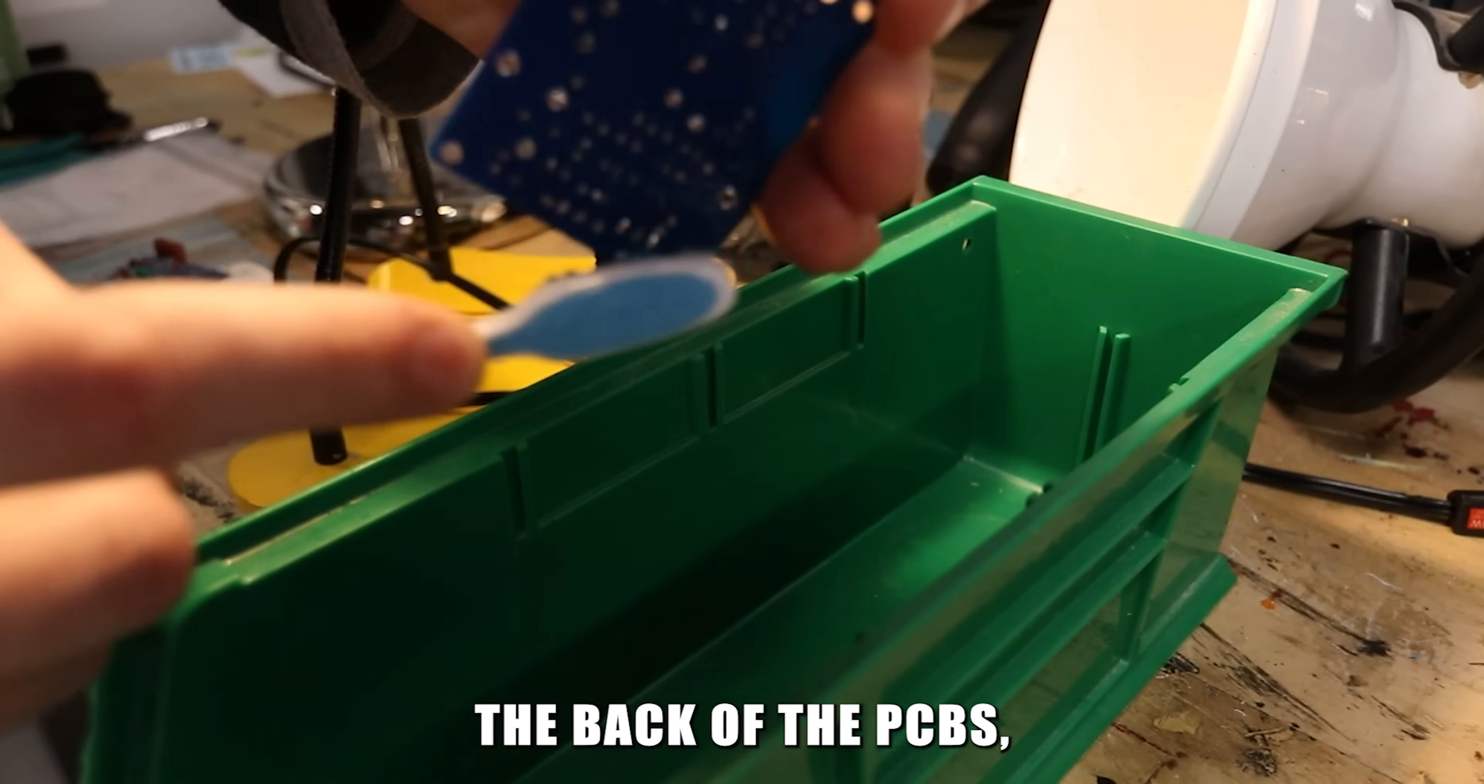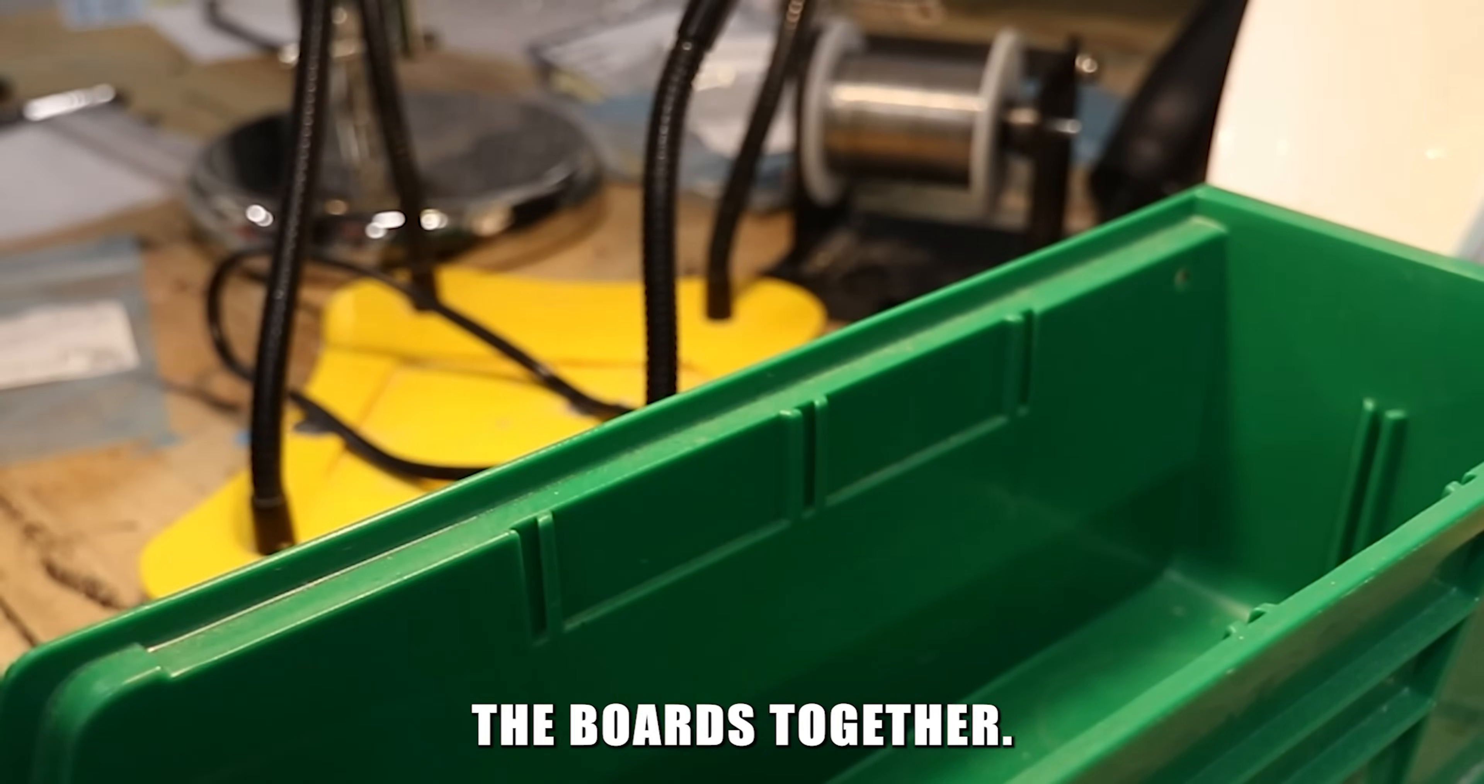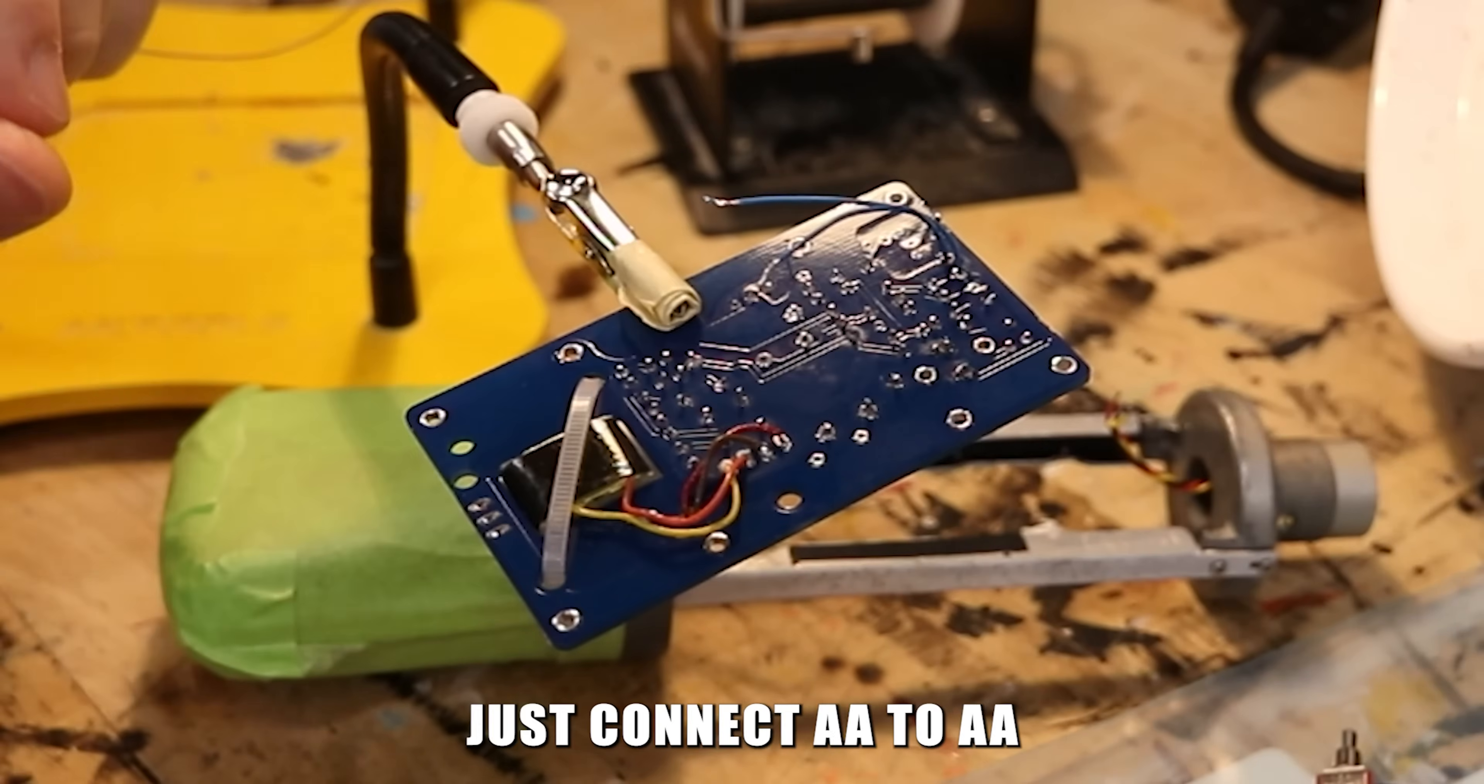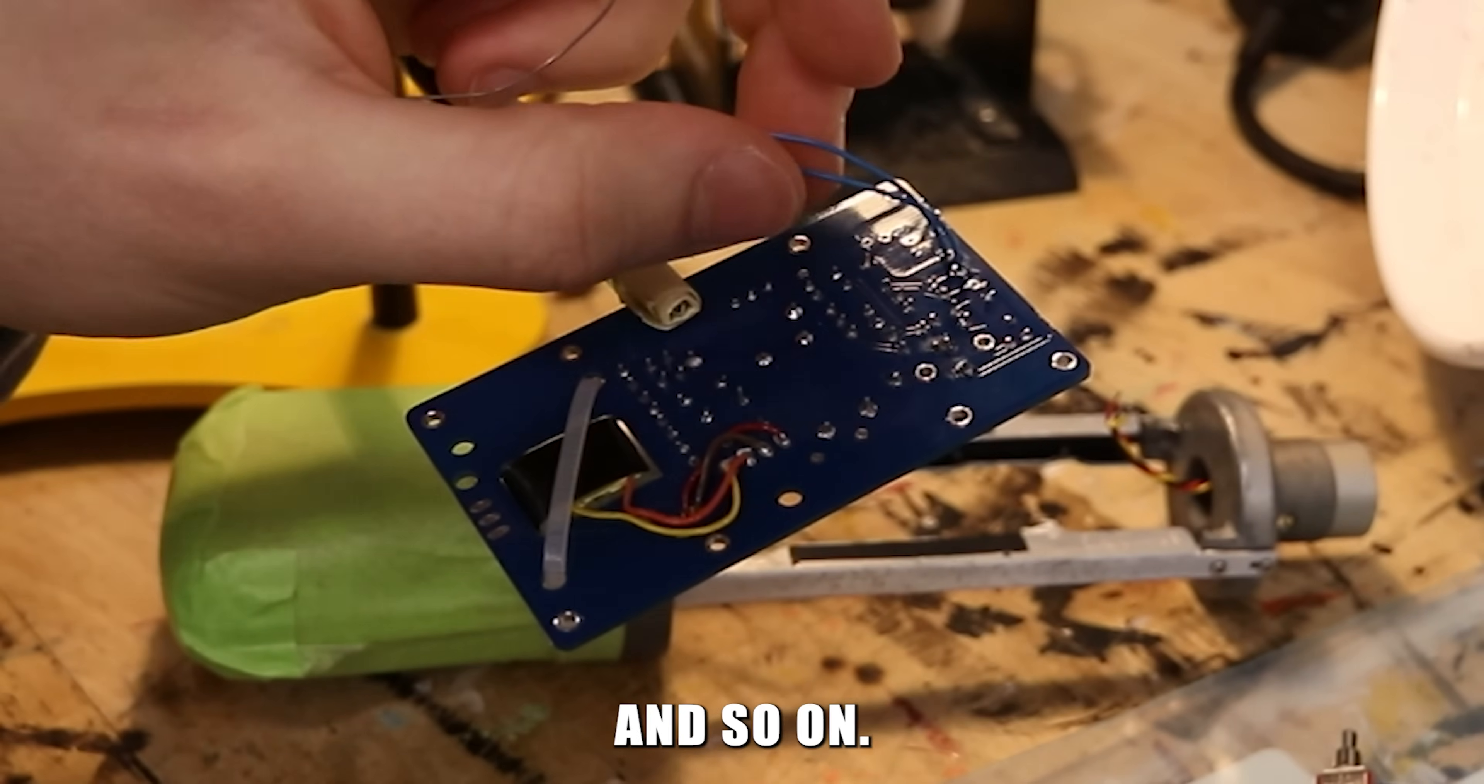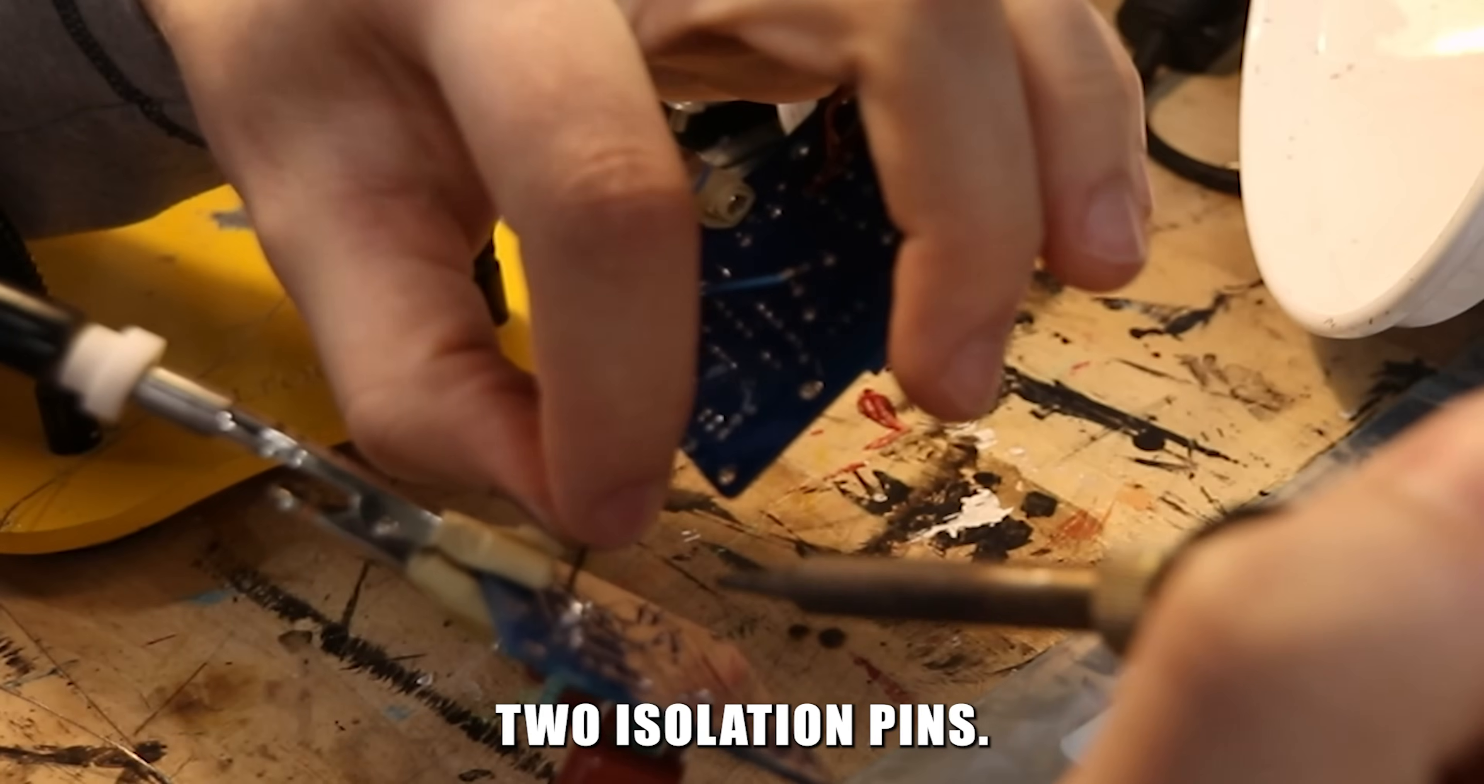After cleaning the back of the PCBs, I cut some 26 gauge wire to length to connect the boards together. The connection points on the PCBs are letter coded, just connect AA to AA and so on. And you also need a ground wire connecting the two isolation pins.